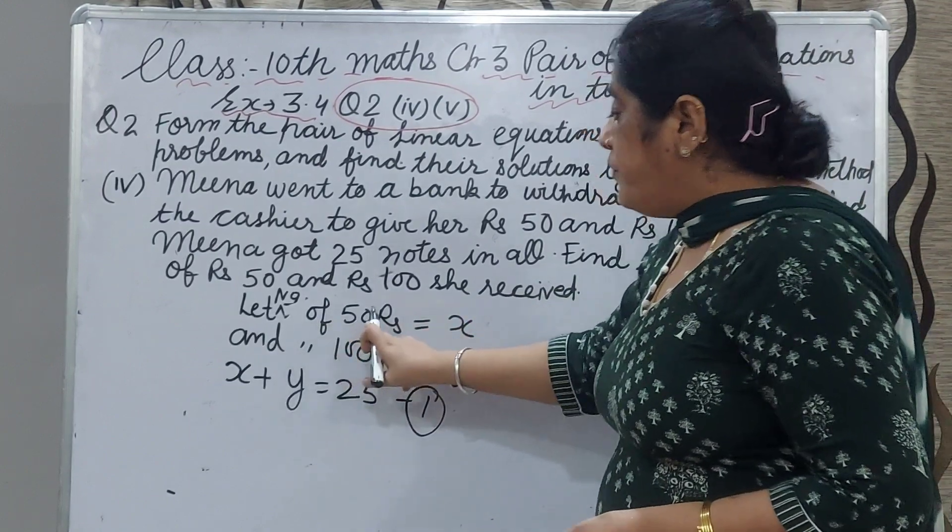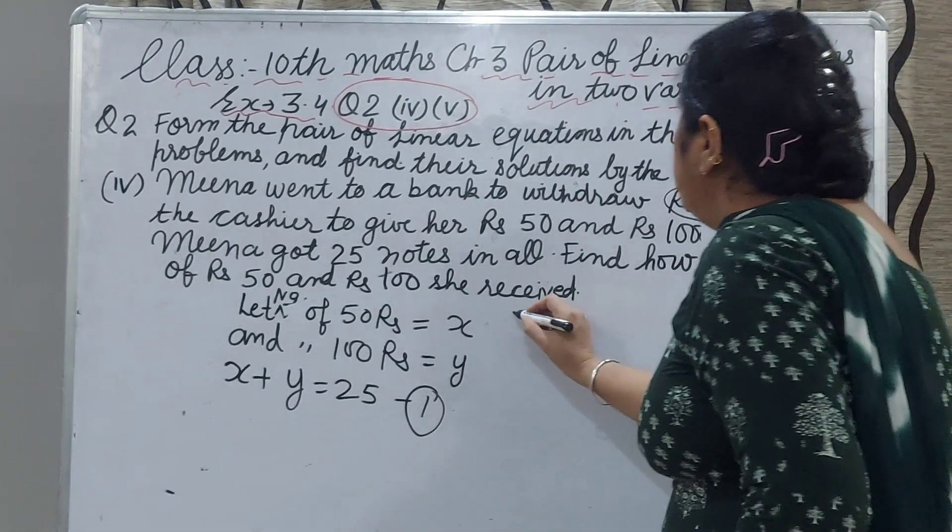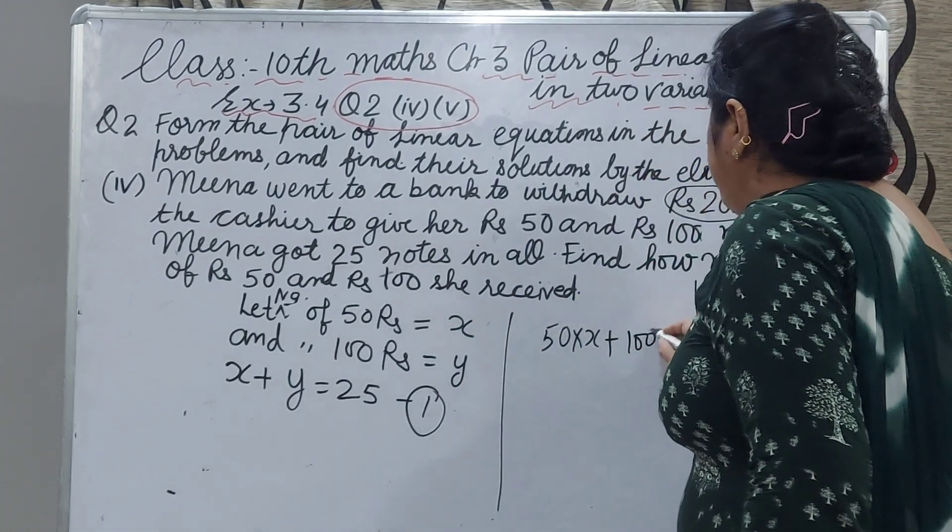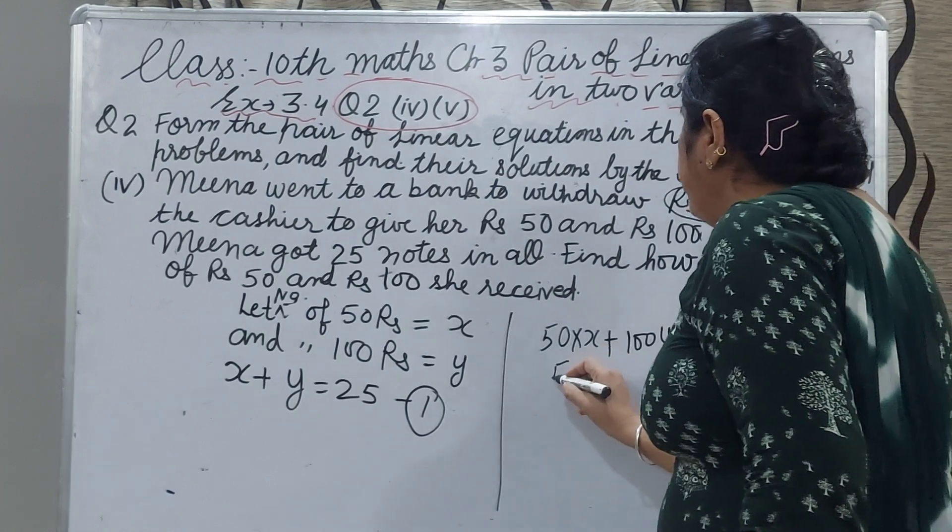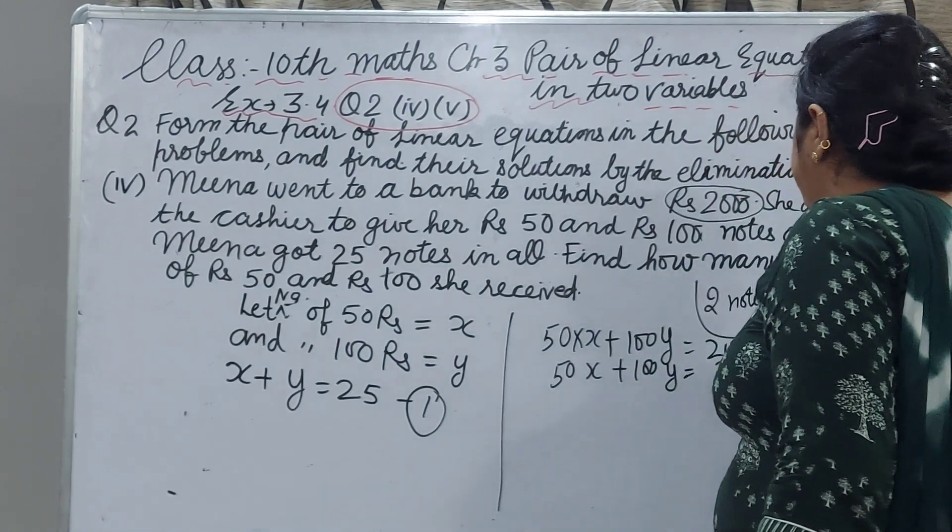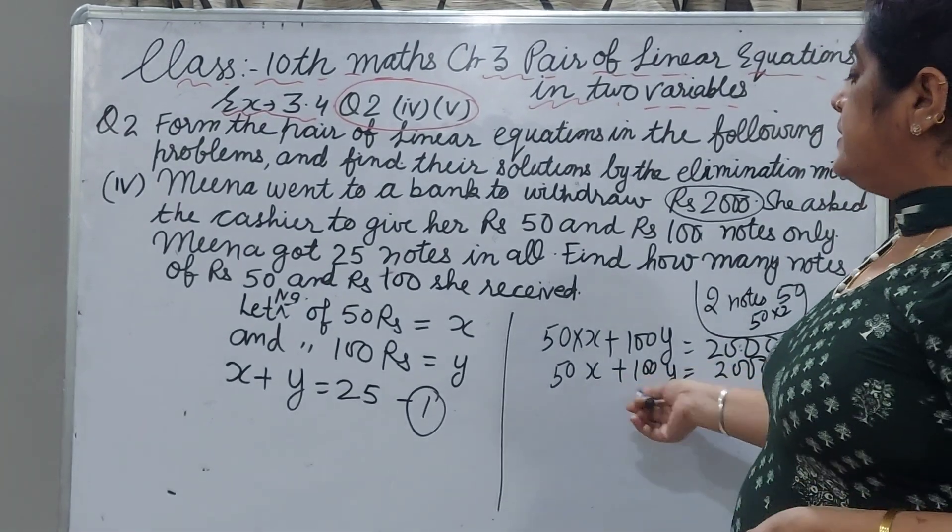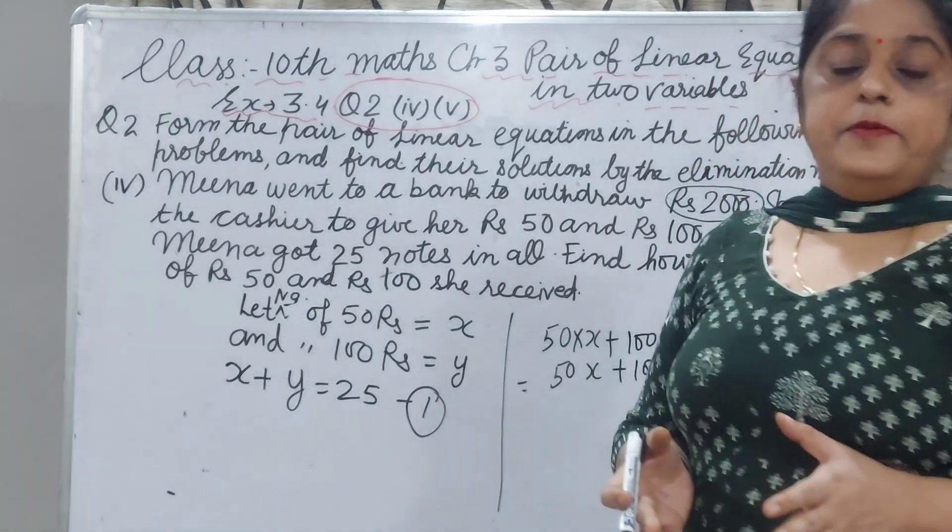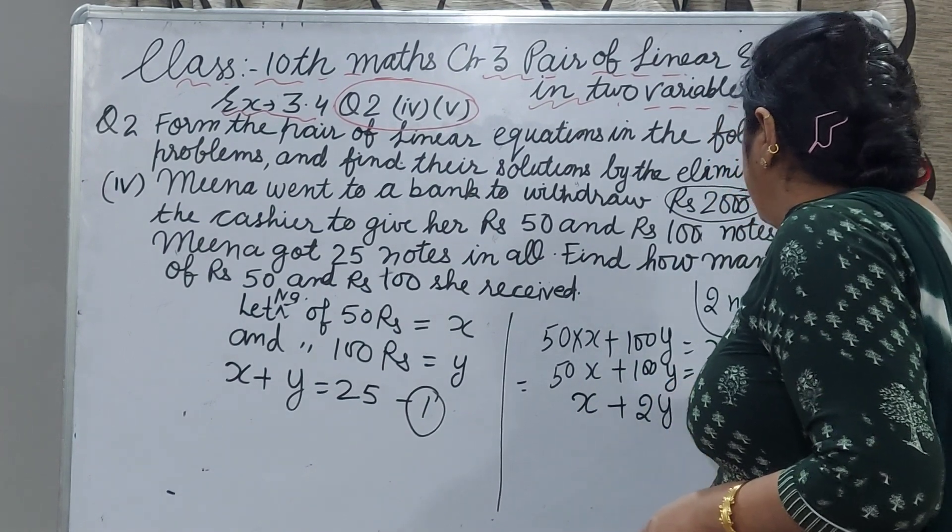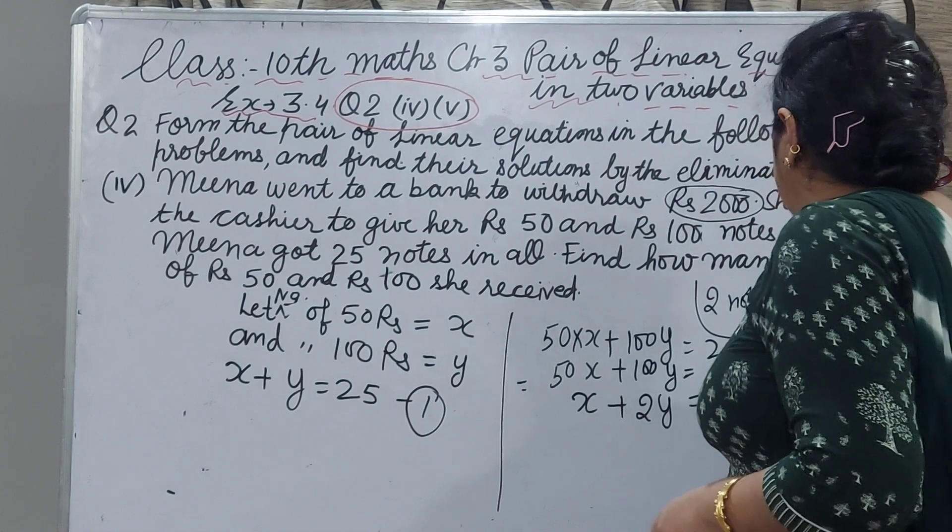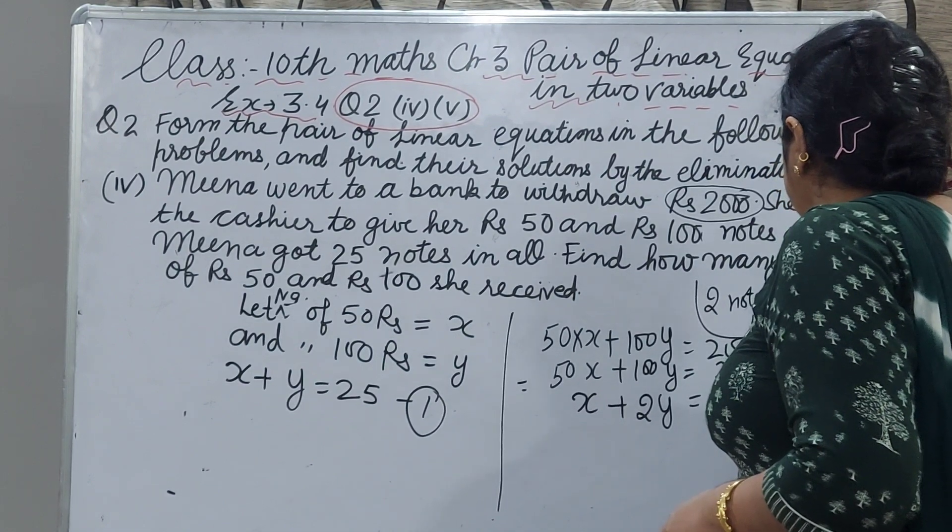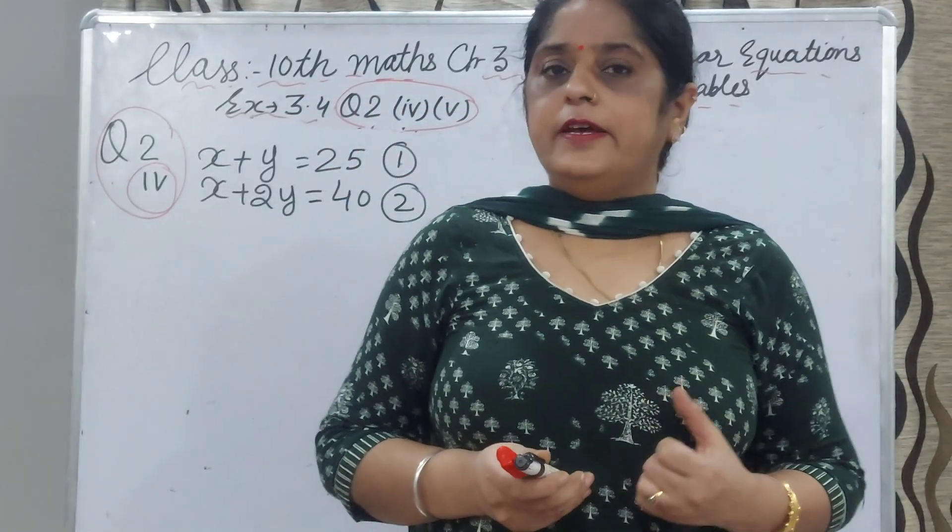So you will write 50 multiply x plus 100 multiply y and total is 2000. 50x plus 100y equal to 2000. If you want to reduce a term, you can divide this equation by 50. It will be x plus 2y equal to 40. That is your equation number 2 by dividing by 50.